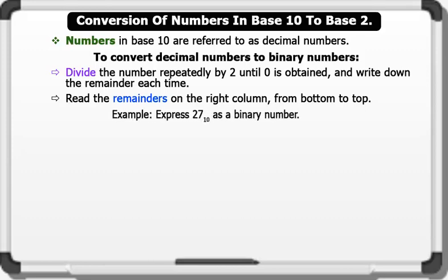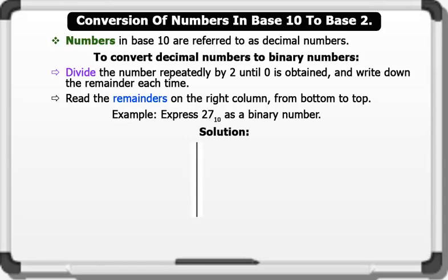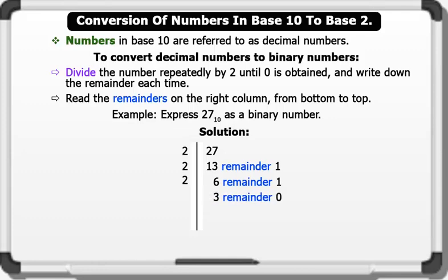Let's see an example. Express 27 in Base 10 as a binary number. Solution: We divide through by 2. 27 divided by 2 gives us 13 remainder 1. 13 divided by 2 gives us 6 remainder 1. 6 divided by 2 gives us 3 remainder 0. 3 divided by 2 gives us 1 remainder 1. 1 divided by 2 gives us 0 remainder 1.